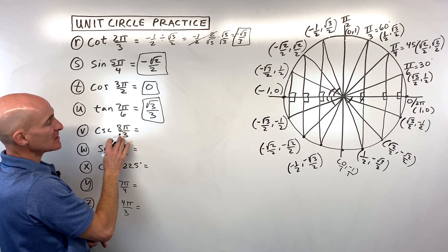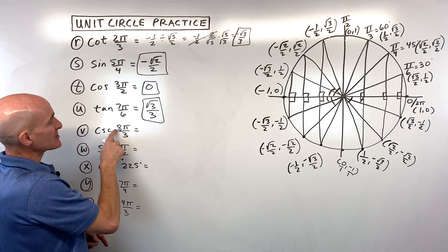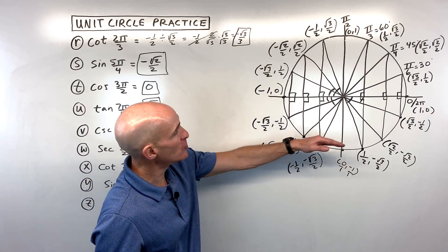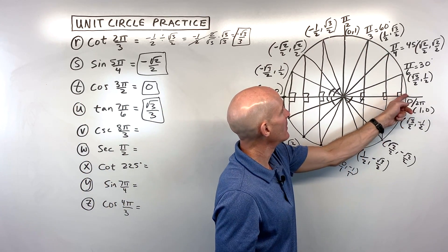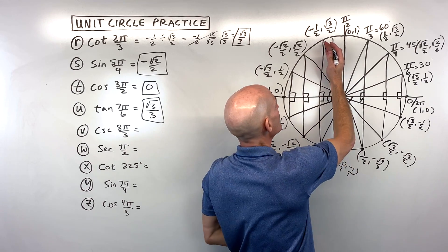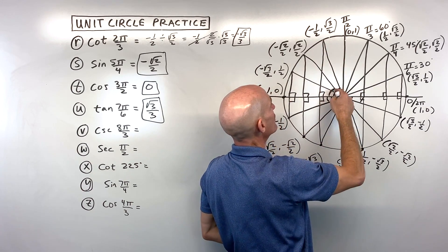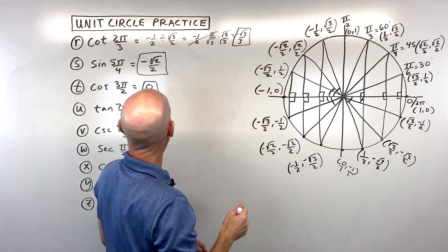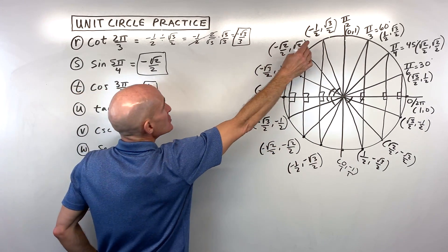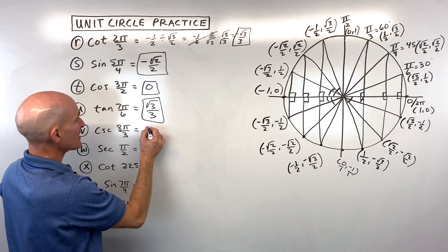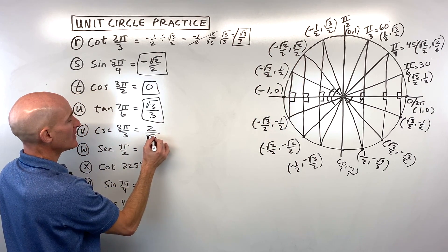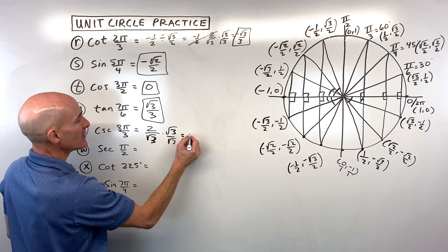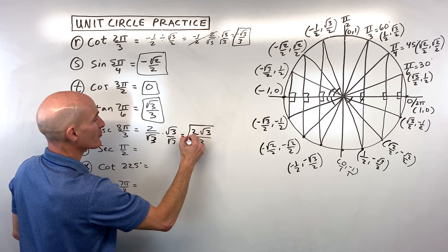Letter V: cosecant of 8π/3. Think of this as 2 and 2/3 π — go all the way around (2π) plus another 2/3 of π. The reference angle is 1/3 π (60 degrees). Coordinates are negative 1/2, √3/2. Cosecant is the reciprocal of sine (y-coordinate): 2/√3. Rationalize by multiplying by √3/√3 to get 2√3/3.